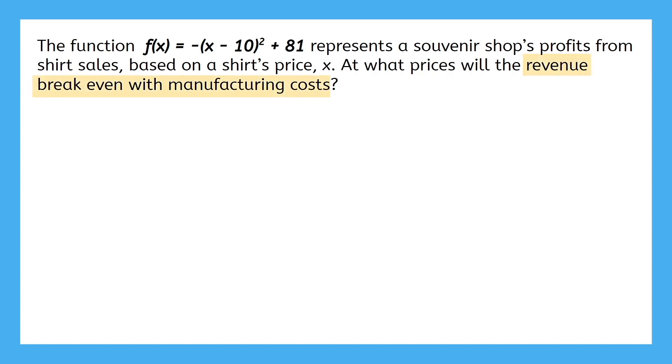This time, we want to know when the revenue breaks even with manufacturing costs. Revenue is the money they make from sales, and manufacturing costs are how much they pay to get the shirts. So for those to break even means the shop makes no profit. If we're asking when is the profit zero, that's the same as asking, what are the roots?